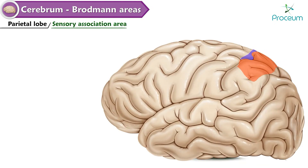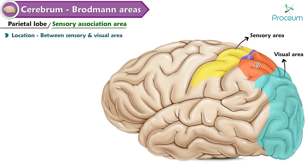Sensory association area — Areas 5 and 7. Location: between the sensory and visual areas. Functions: stereognosis and sensory speech.